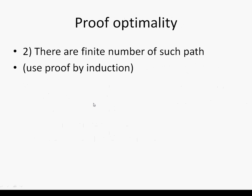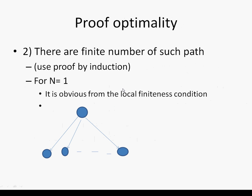Now the second thing we have to prove is that there are a finite number of such paths, and we prove this by induction. There are a finite number of paths having n edges. To prove by induction, we first prove for n equals 1. For n equals 1, it is quite obvious from the local finiteness condition: any node has a finite number of children, so from the source there are a finite number of edges pointing to child nodes, each of length 1. Therefore, there are a finite number of paths of length 1.